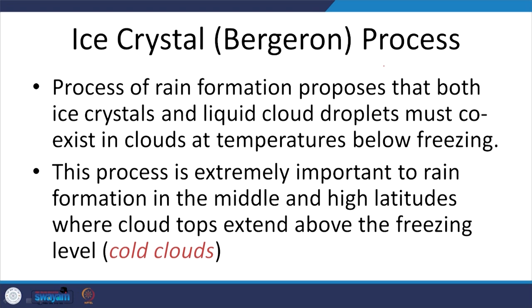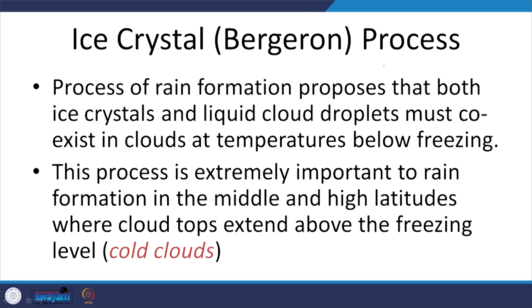Clouds depending on their height of occurrence need not always contain only water droplets — they sometimes also contain ice crystals, especially at very high altitude. The Bergeron process proposes that both ice crystals and liquid cloud droplets must coexist in clouds at temperatures below freezing. This process is extremely important to rain formation in the middle and high latitudes where cloud tops extend over the freezing level. If clouds are at sub-freezing temperatures you get ice crystals rather than droplets.